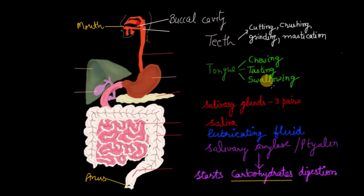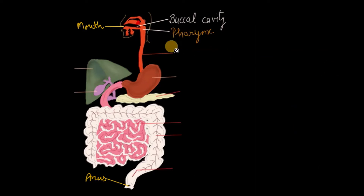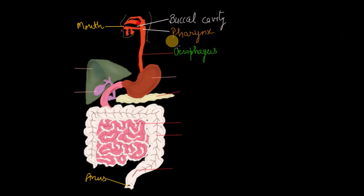After swallowing food from the buccal cavity, it enters into the pharynx. The pharynx has three parts: the upper part connecting to the nasal passage is the nasopharynx, the lower part connecting to the larynx is the laryngopharynx, and here we are talking about the oropharynx. Food from the buccal cavity goes through the pharynx to the esophagus, which transfers the food to the stomach.